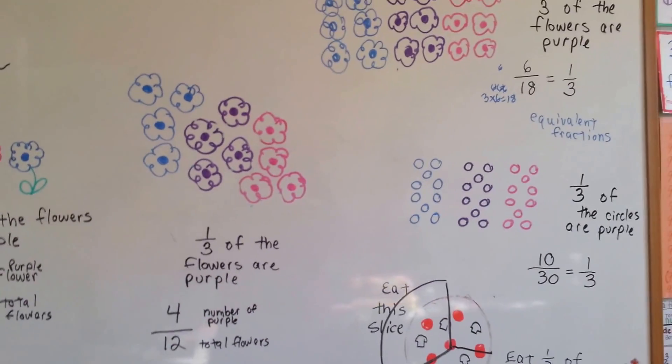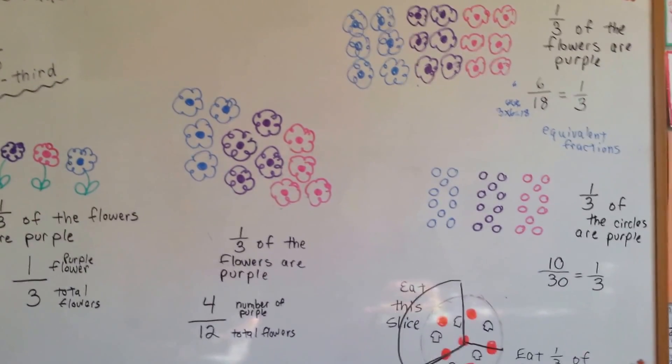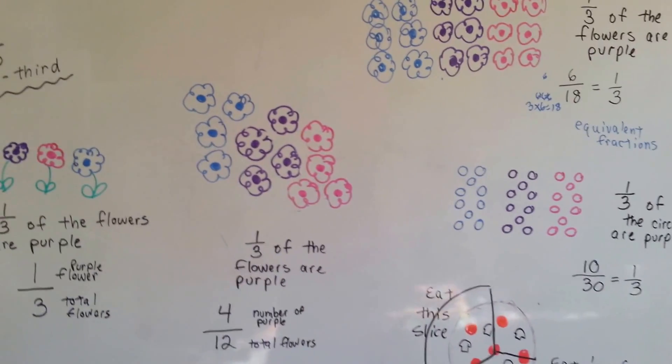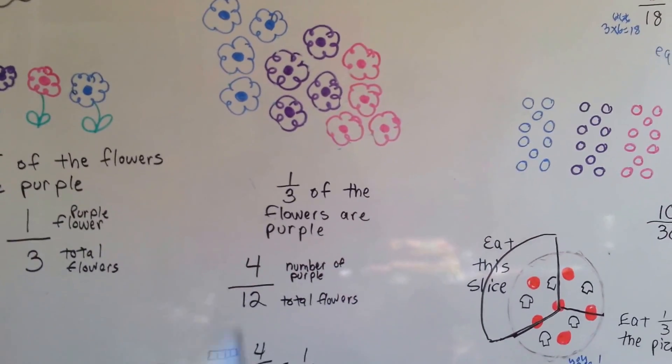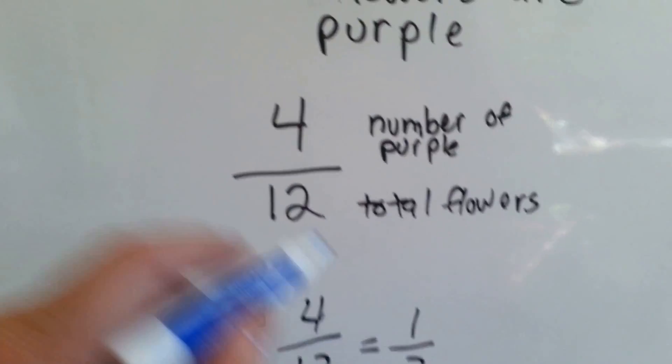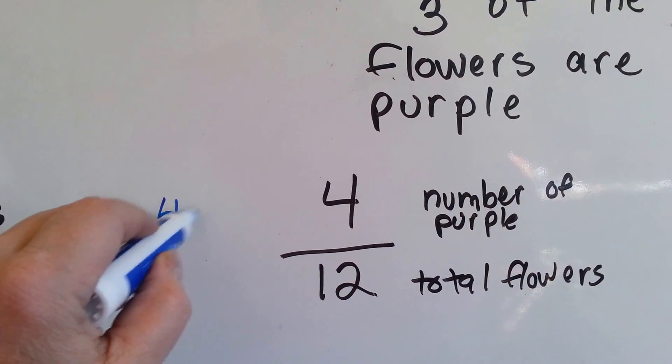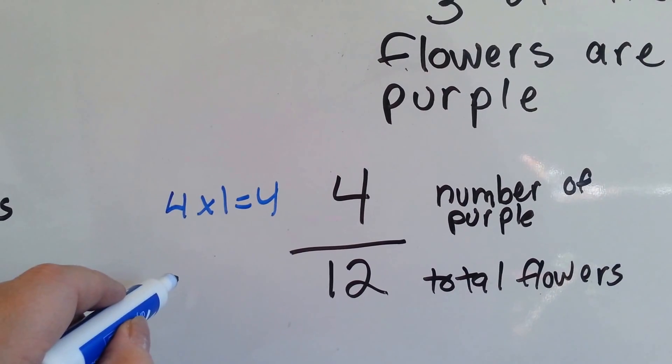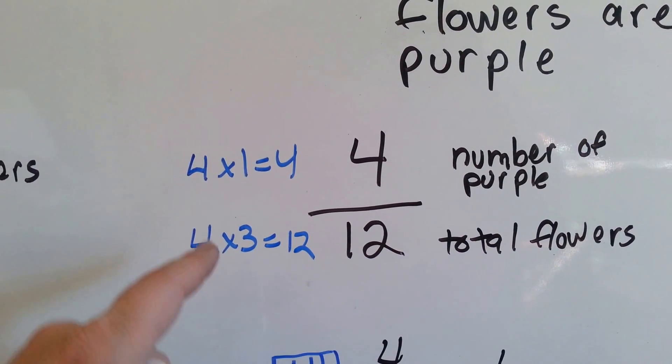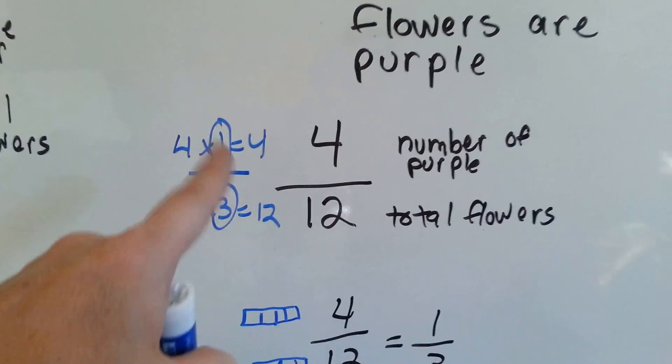Equivalent fractions are just fractions that are equal to each other. And the numbers may be a little bit different, but they still are equal to each other. I want to show you something with this one. In four-twelfths, we know it equals one-third, but in four-twelfths you can say four times one equals four, and four times three equals twelve. And then you see the one and the third. There's the fraction. There's the one-third. See that?